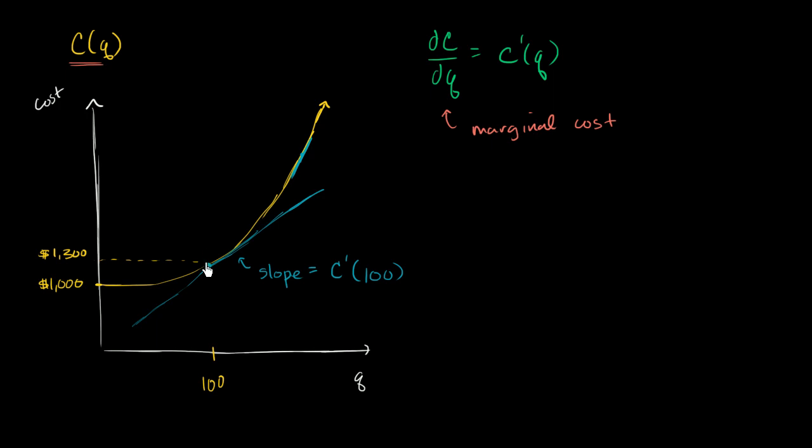And there's other similar ideas. If we modeled our profit as a function of quantity, if we took the derivative, that would be our marginal profit. If we modeled revenue, that would be our marginal revenue. How much is the function increasing on the margin, or how much does the function increase as we increase our input, or as we increase our quantity on the margin?